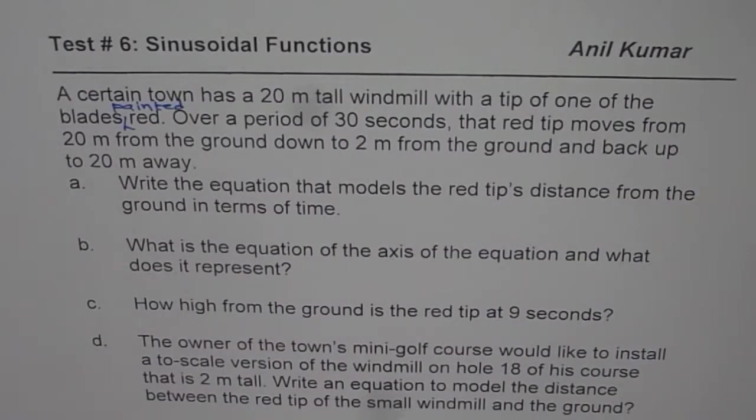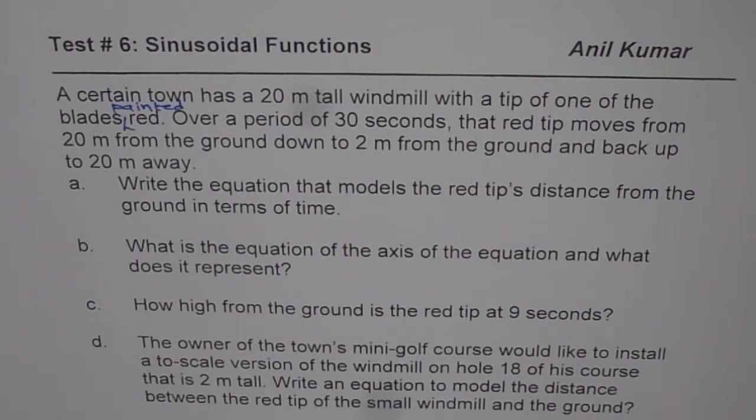The question here is: A certain town has a 20 meter tall windmill with a tip of one of the blades painted red. Over a period of 30 seconds, that red tip moves from 20 meters from the ground down to 2 meters from the ground and back up to 20 meters away. Write the equation that models the red tip's distance from the ground in terms of time. What is the equation of axis of the equation and what does it represent? How high from the ground is the red tip at 9 seconds? So answer these three questions first and then we will look into other two questions on the same problem.